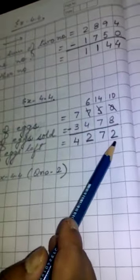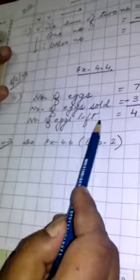So your answer is how many eggs are left now? So 4272 eggs are left. So number of eggs left equal to 4272.